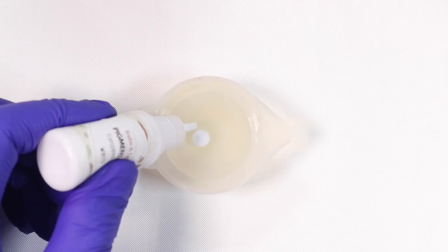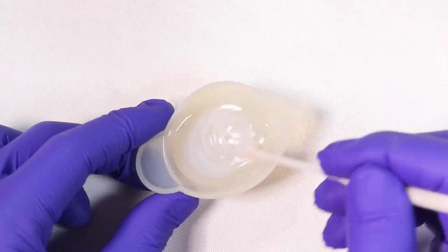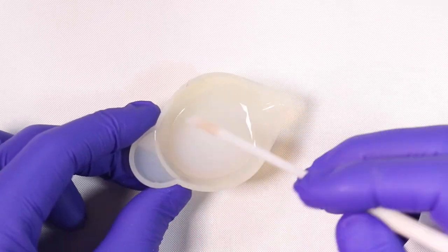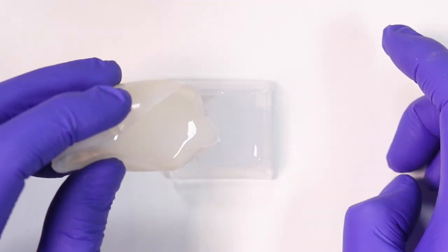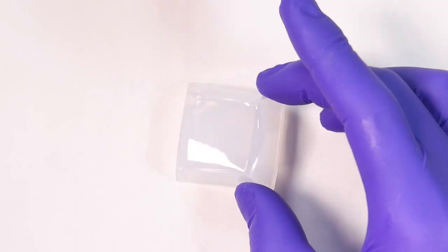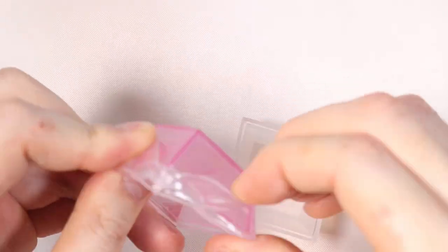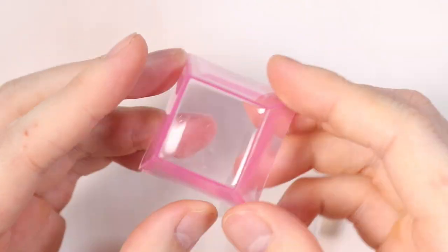And then for the bottom box, we're going to make a mixture of white resin and pour that into the mold as well. And after it's fully cured, we're just going to demold both pieces.